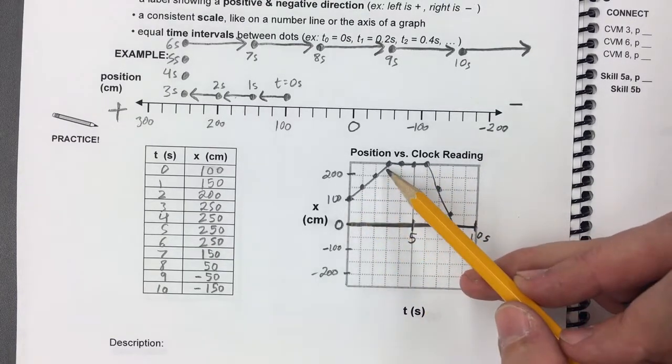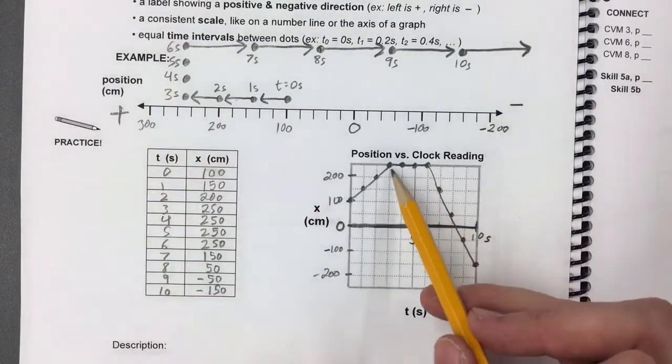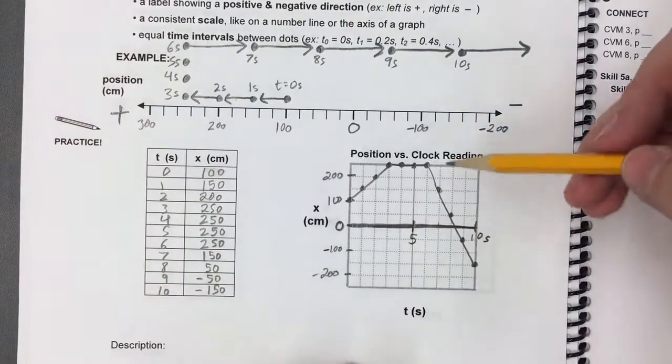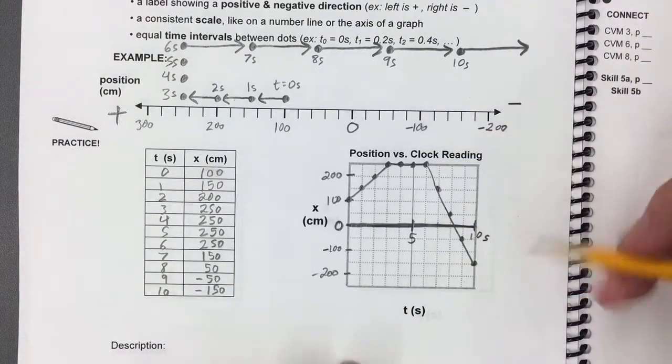This slope looks positive when Ms. Gabriel was moving positive. This slope looks like it's 0 when Ms. Gabriel is not moving. And it looks like it's negative and steeper when she was moving fast in the negative direction.